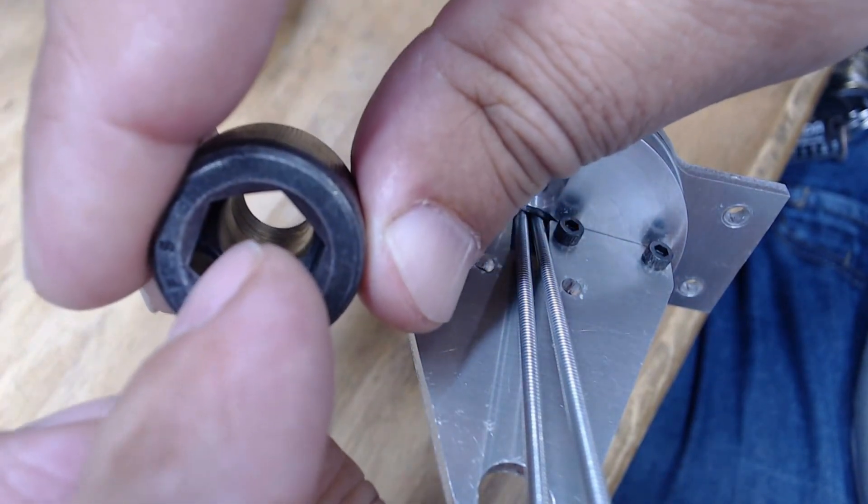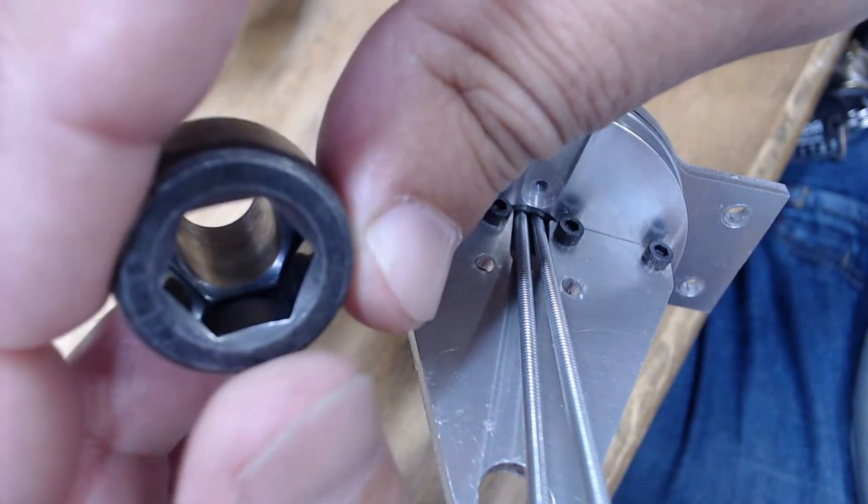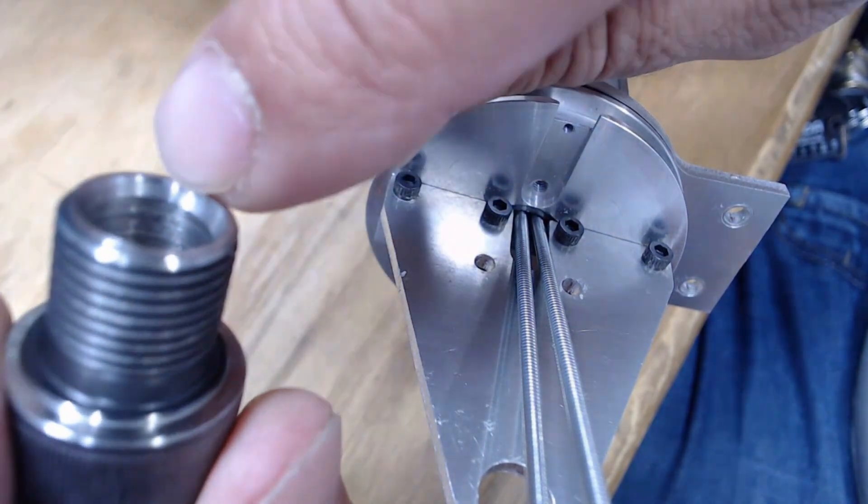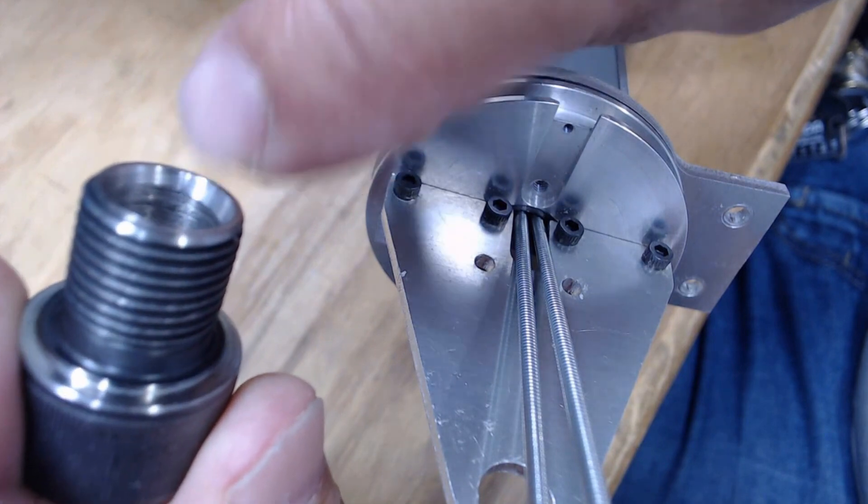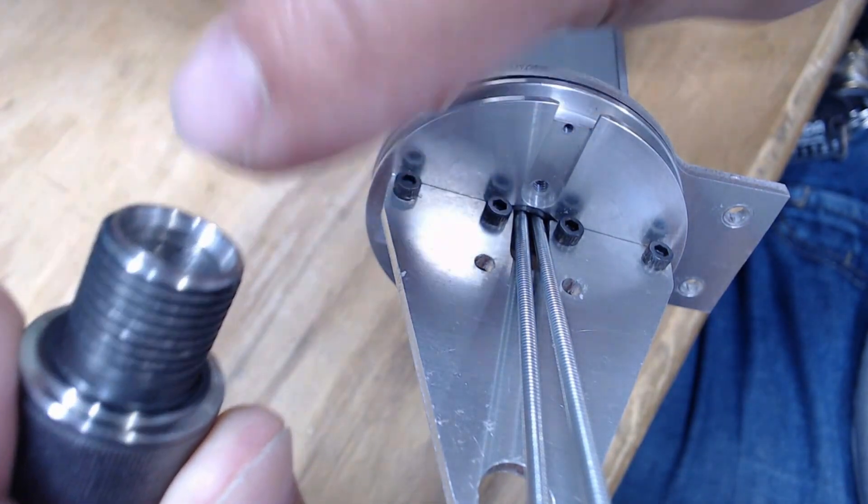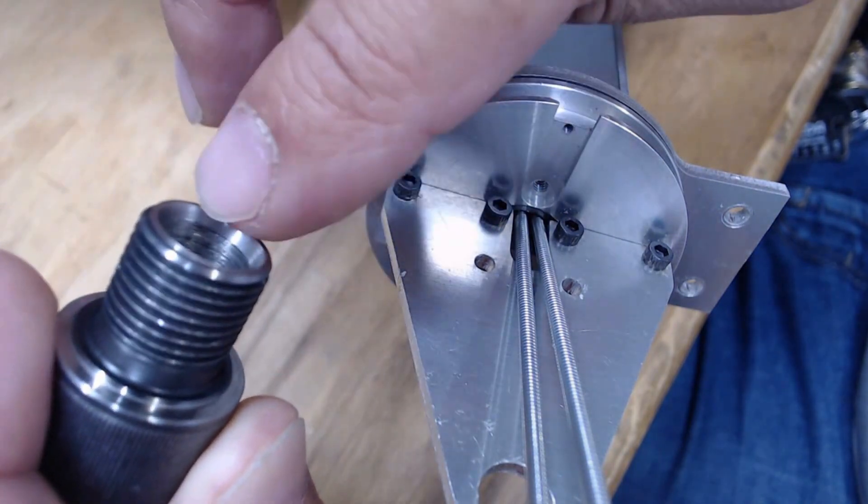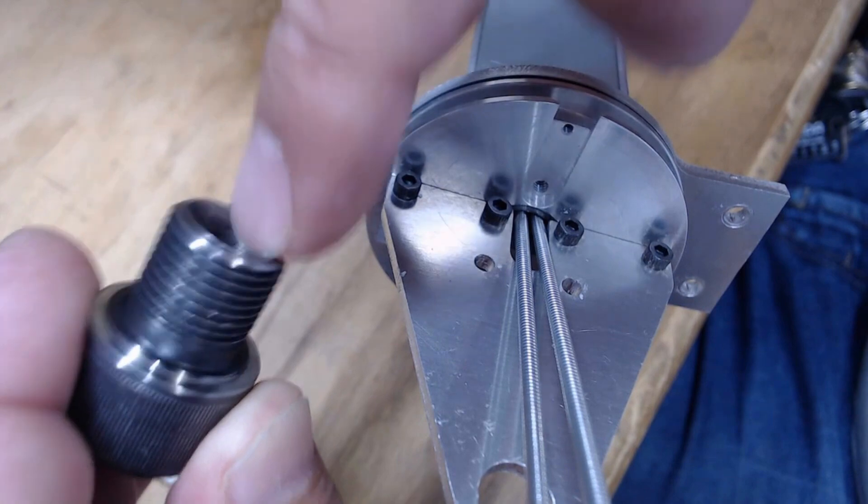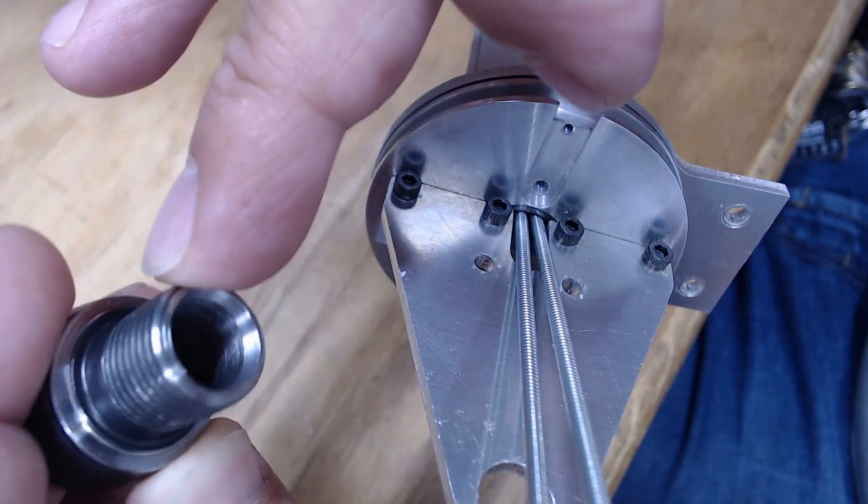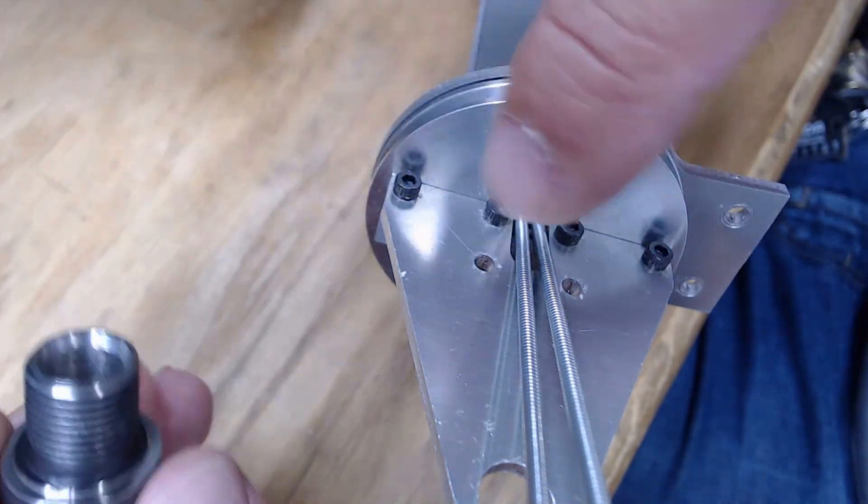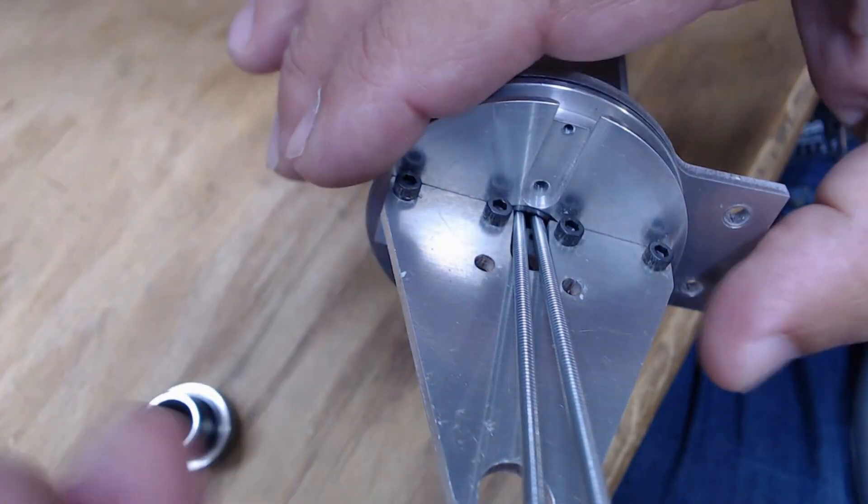So drill this out to 7/16ths and then of course go over here and put a chamfer right here at the top, about 45 degrees or so. You could use like an 82 degree countersink. I couldn't, I'd have to do this on the lathe. My countersinks wasn't touching this material, it's pretty hard, so I just used the end mill and chamfered that.